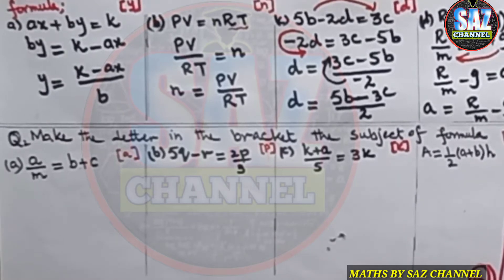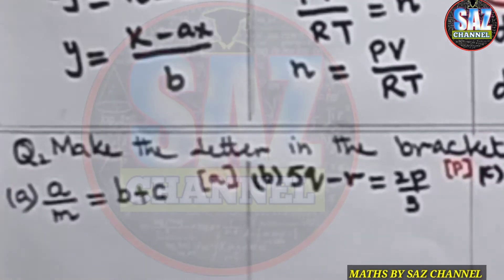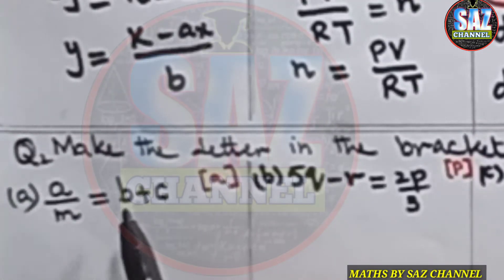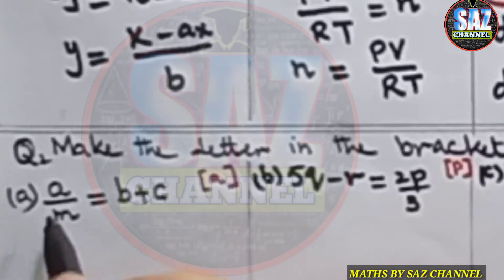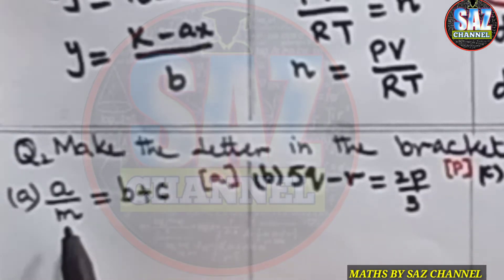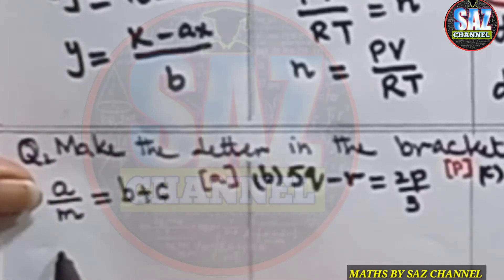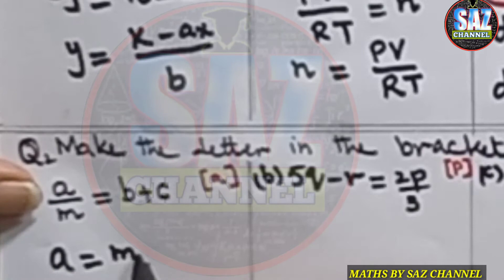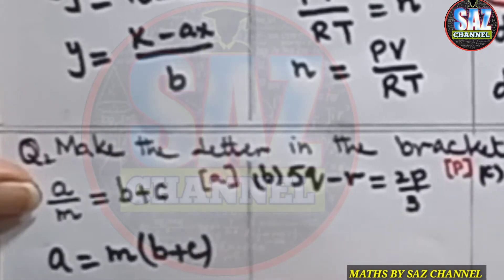Moving to Question 2, we again need to make the letter in the bracket the subject of the formula. Part A is a/m = b + c, and we want to make a the subject. Since m is dividing a, we shift m to the other side: a = m(b + c). This is a one-step solution.